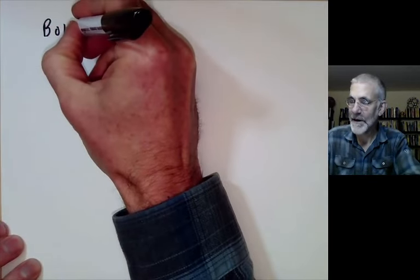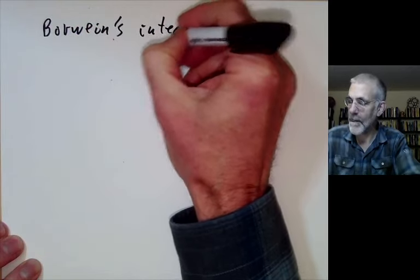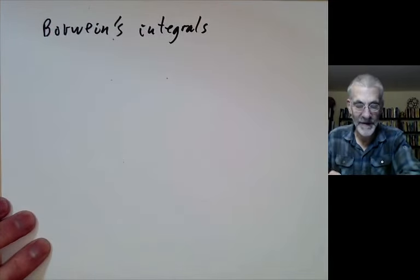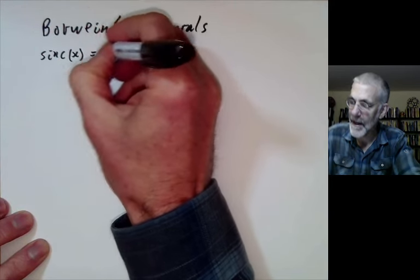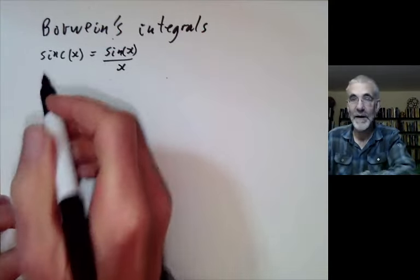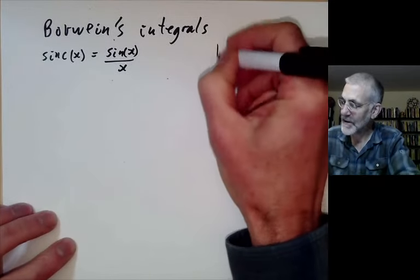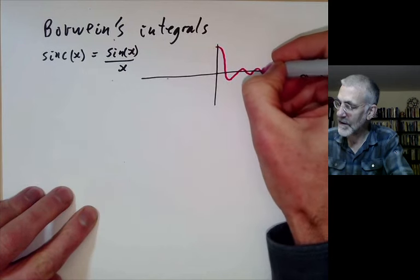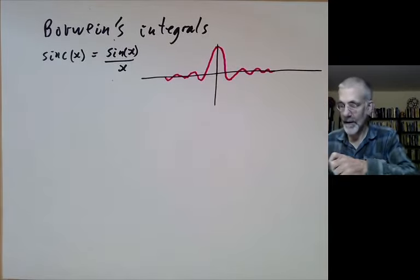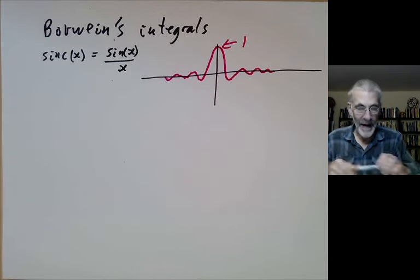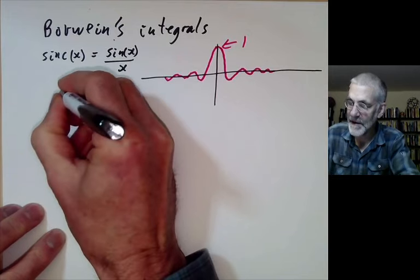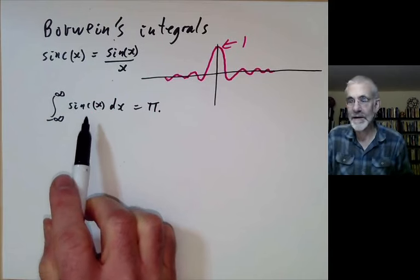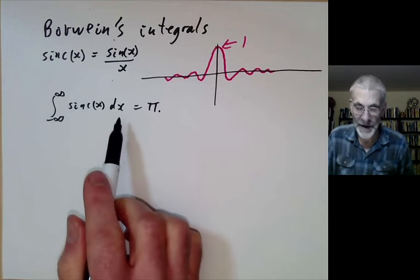This video will be about some rather strange integrals known as Borwein's integrals, which have some rather odd properties. The Borwein integrals are integrals of the sinc function. We recall that sinc of x is just sin of x over x, and sinc comes from the signals processing community. Its graph looks like just decreasing oscillations. Its value at zero is 1, and it has the basic property that the integral from minus infinity to infinity of sinc of x dx is just pi. This is a common exercise in either complex analysis or Fourier transform theory.